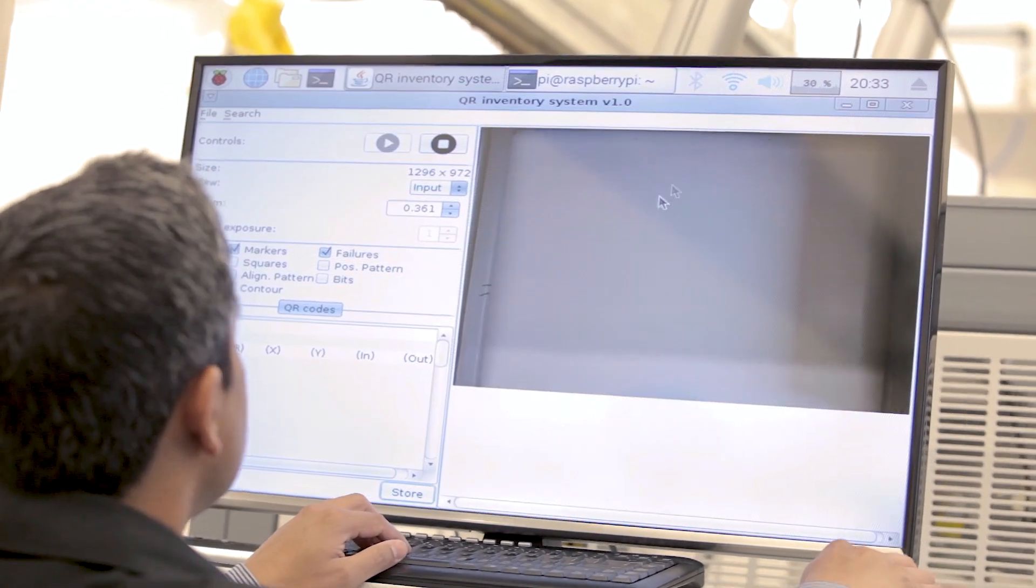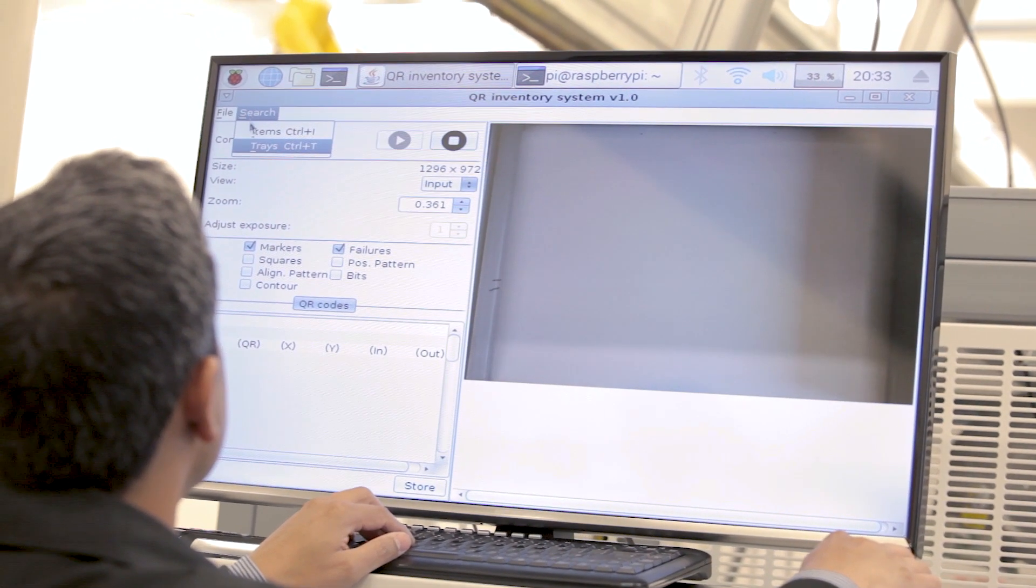The system will then identify all of the parts inside the box, scan all of the QR codes simultaneously and store some information about each of the parts which can be searched later.